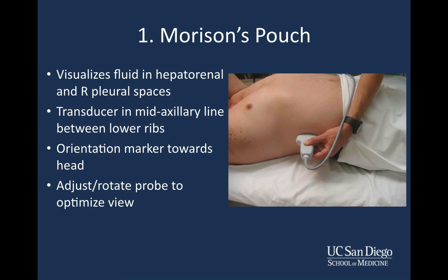View one is Morrison's pouch, which visualizes fluid in the hepatorenal and right pleural space. Place the transducer in the mid-axillary line in the right flank between the lower ribs, with the orientation marker towards the head. Adjust or rotate the probe to optimize the view. You may need to rotate it slightly to aim obliquely through the ribs to avoid rib shadowing, especially with the larger curvilinear transducer.